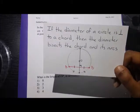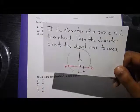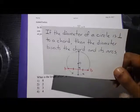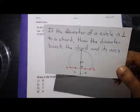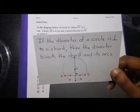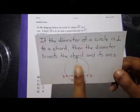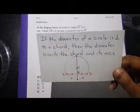And then here is one of the properties of a chord that is being bisected by a diameter, and that only occurs when that chord is perpendicular to it. So if the diameter of a circle is perpendicular to a chord, then the diameter bisects the chord and its arcs.